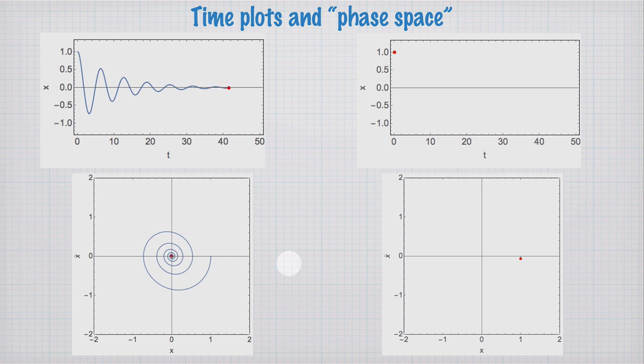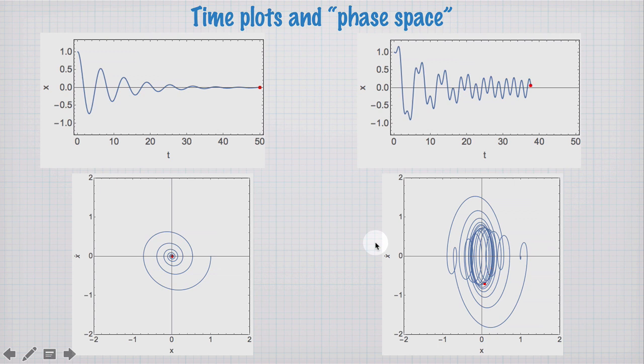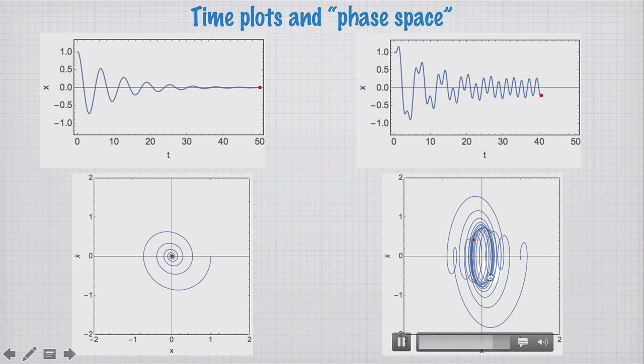If we now look at the damped driven case on the right-hand side, then we see some quite complicated behavior, both for position as a function of time and in phase space. What we're seeing here is the transient behavior dying out. The transient behavior is this long period here. And eventually, for longer times, then all we're left with is the driven frequency, which is this high-frequency behavior we see here. And what you see is this red dot going around an ellipse in phase space. And we'll call this ellipse a limit cycle.